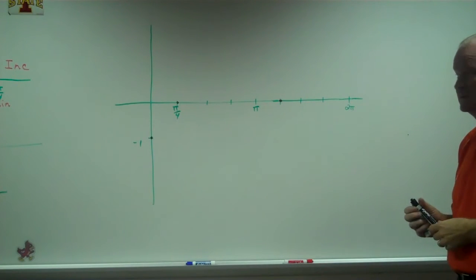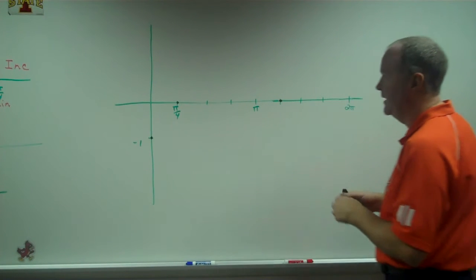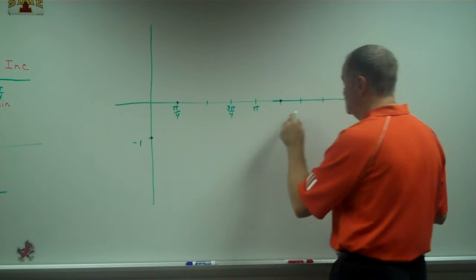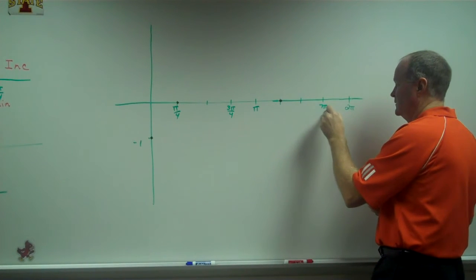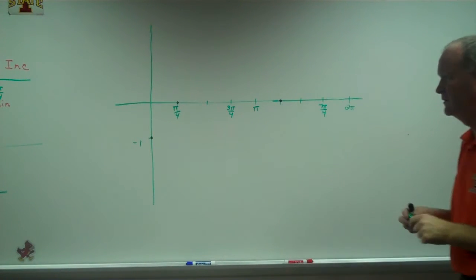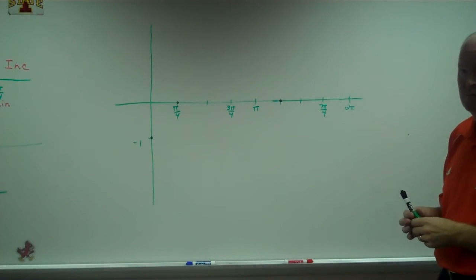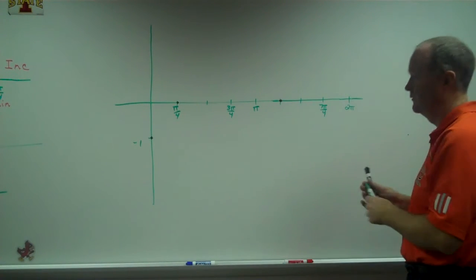Critical points: 3π over 4 and 7π over 4. How do I find out where they go? Into the original one, right?